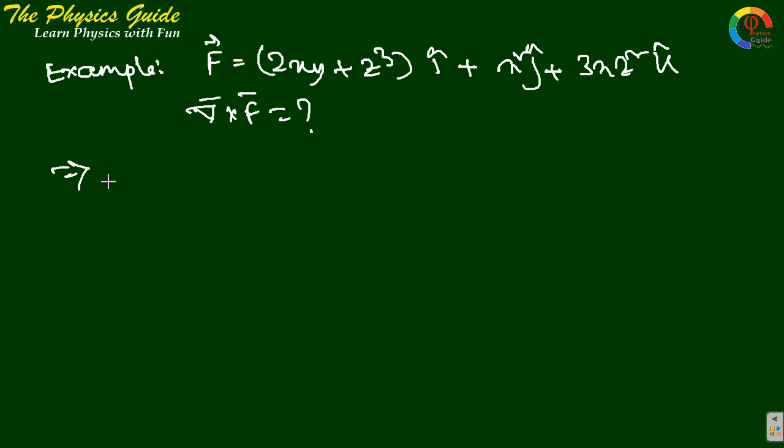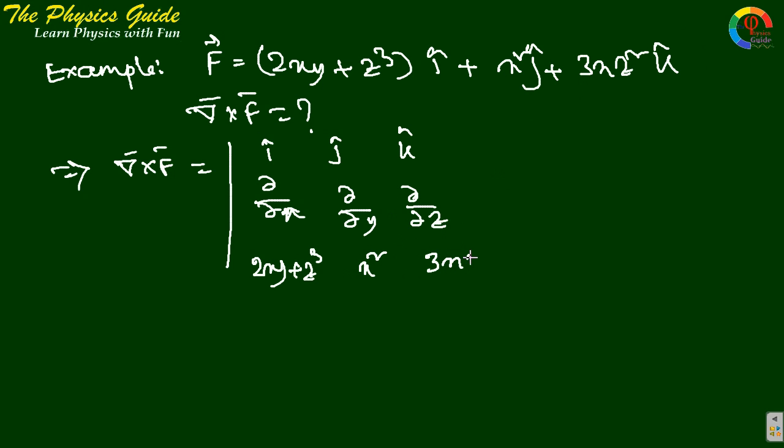So just solve this using our formula. Del cross F equals the modulus of i cap j cap k cap, del/del x del/del y del/del z. This is 2xy plus z³, this is x², this third term az is 3xz².